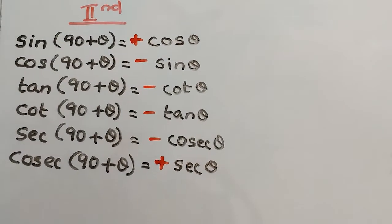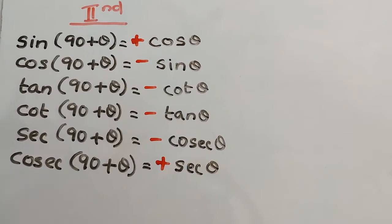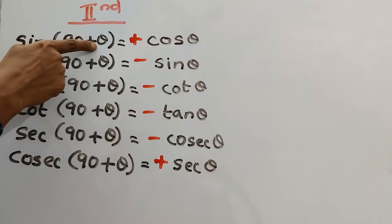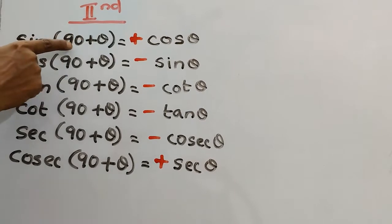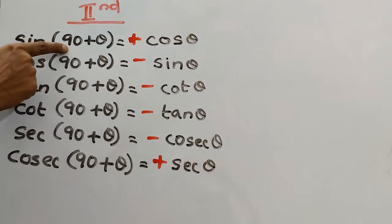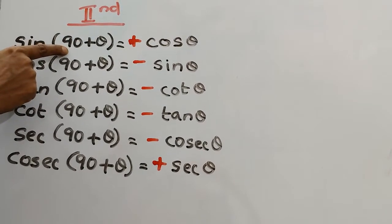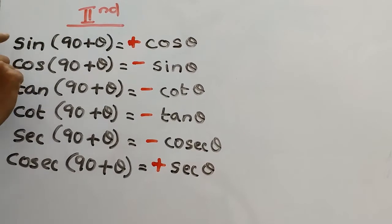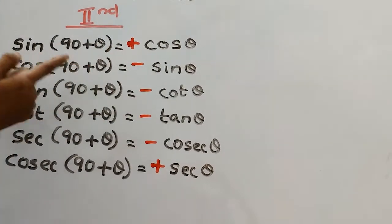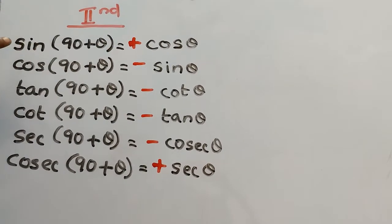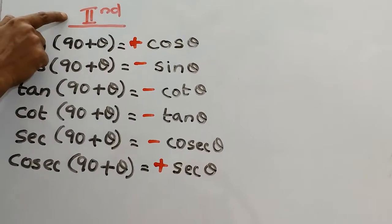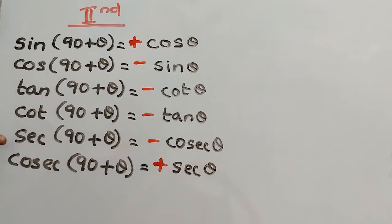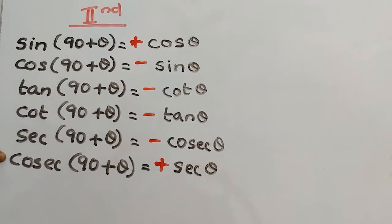Hope you understand. First quadrant, second quadrant — 90° + θ. 90 is an odd multiple of 90, so we must change the trigonometric ratios. In the second quadrant, only sine and cosec are positive.